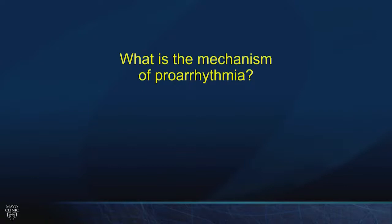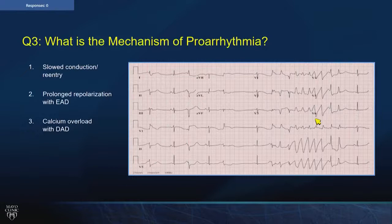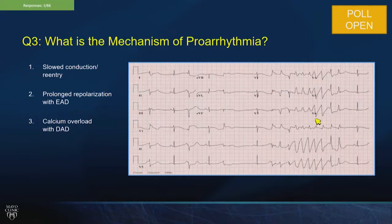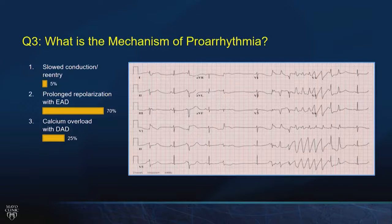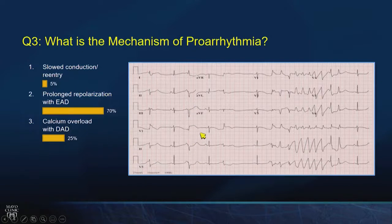Let's do a quick check with some ECGs. Looking at this first ECG, is the mechanism slowed conduction and reentry, prolonged repolarization with early after depolarizations, or calcium overload with delayed after depolarizations? This is an example of prolonged repolarization — you can see the QT interval is long, the T-wave is flat, and PVCs are falling on the terminal component of the T-wave. That's the early repolarization time for EADs, triggering salvos of polymorphic ventricular tachycardia.